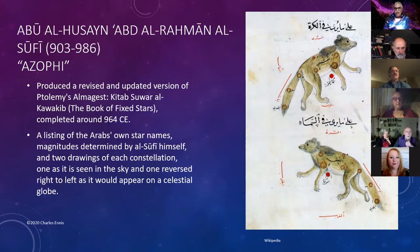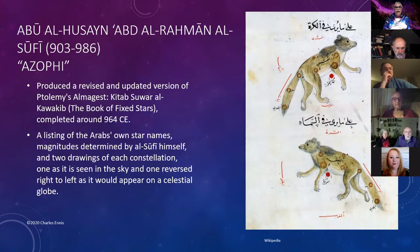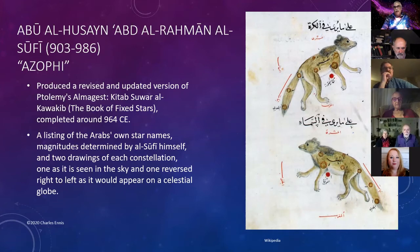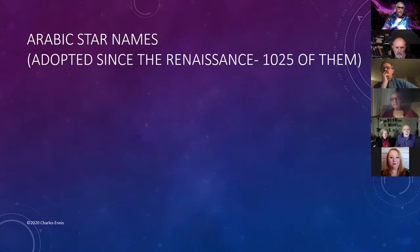Al-Sufi's Book of Fixed Stars listed the Arabs' own star names, magnitudes determined by al-Sufi himself, and two drawings of each constellation — one as seen in the sky, and one reversed as if you've gone off into space and are looking back through the constellation toward the ground, which is kind of clever.